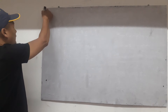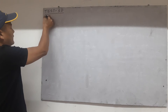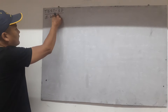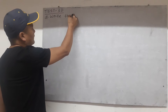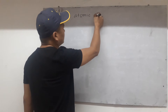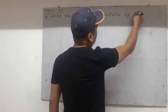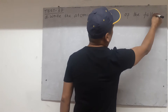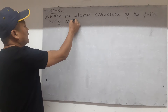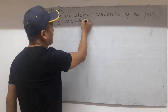We're continuing to test 3D. In this class, let us discuss this question. You can write it down along with me. Write the atomic structure of the following atoms. So let us write down the question and follow me.